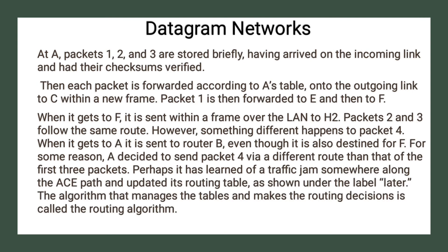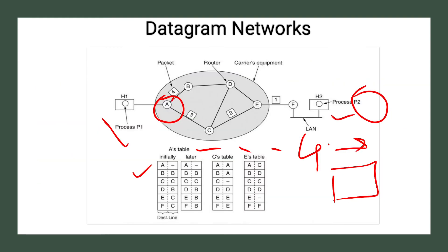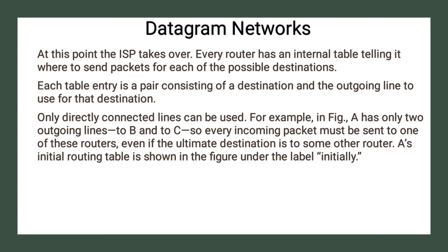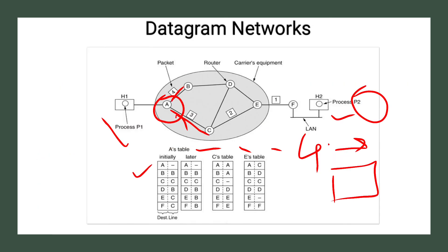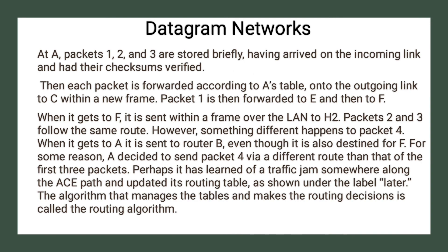For example, router A has only two outgoing lines: to B and to C. So whenever A wants to send packets, they must go to either B or C. Every incoming packet must be sent to one of these routers even if the final destination is some other router. The initial routing table for A shows: A→A, B→B, C→C, D→B, E→C, F→C.